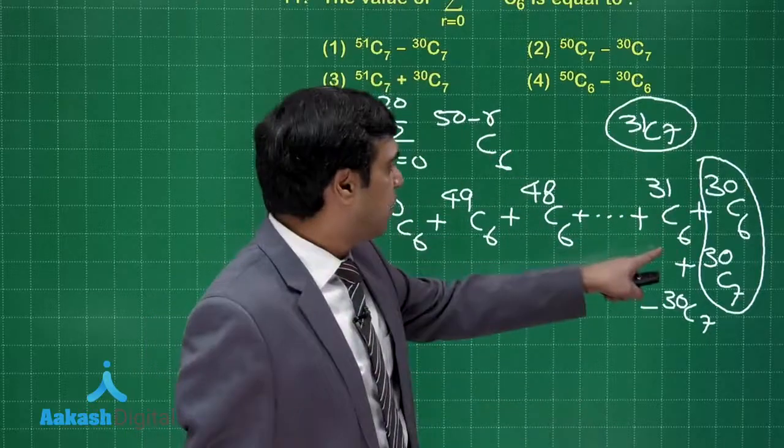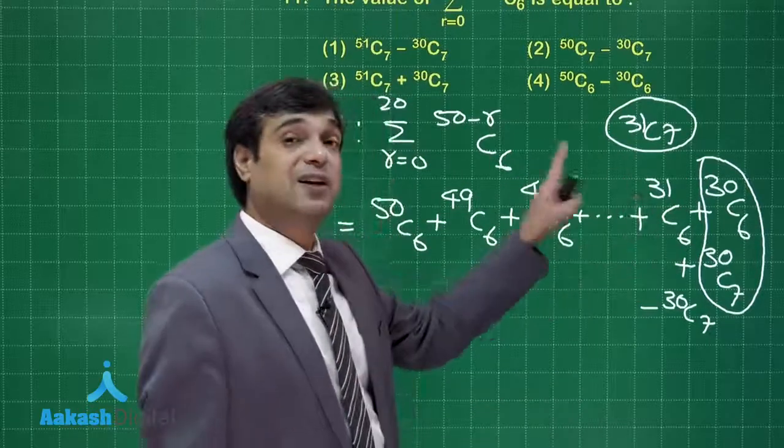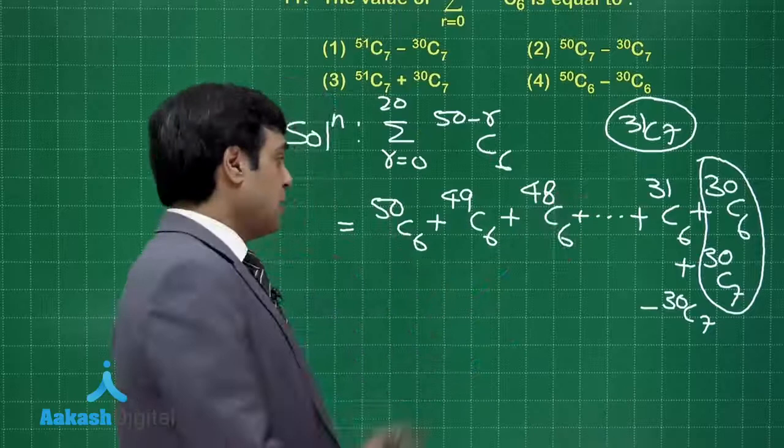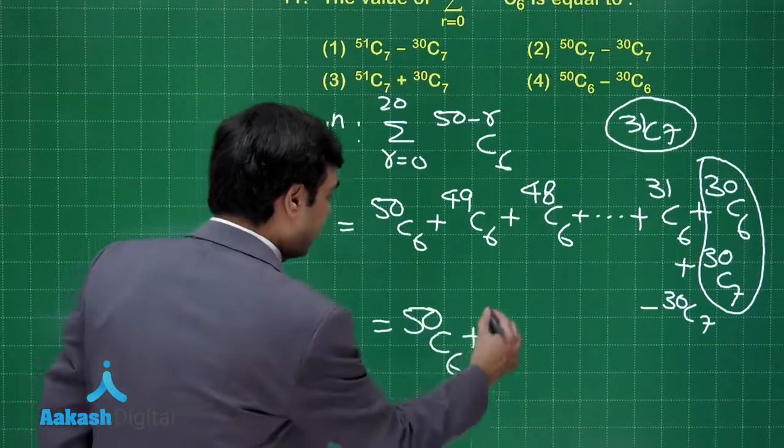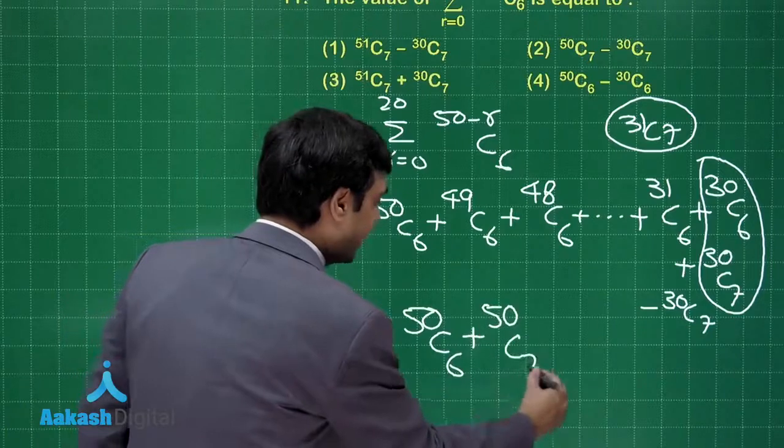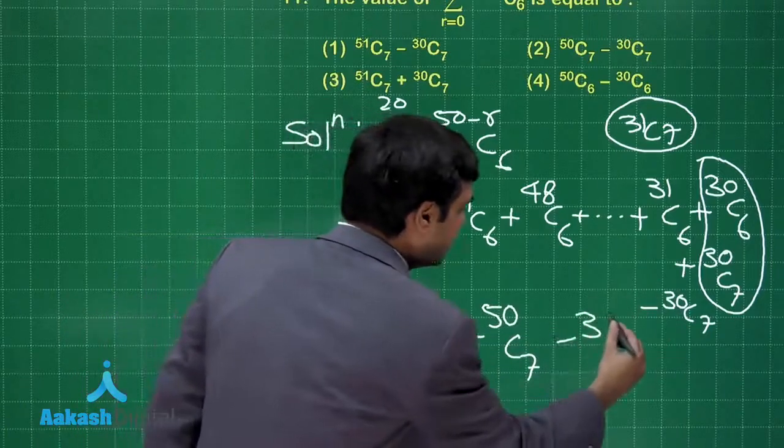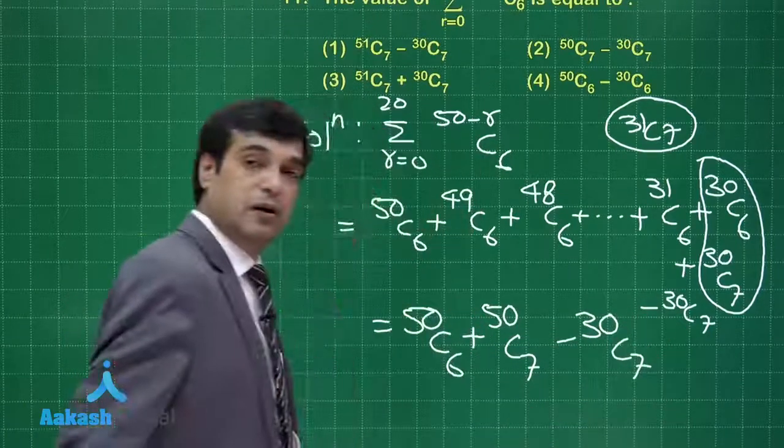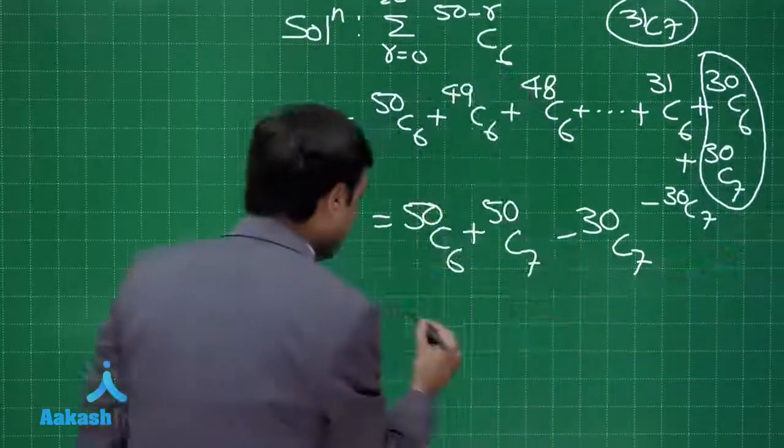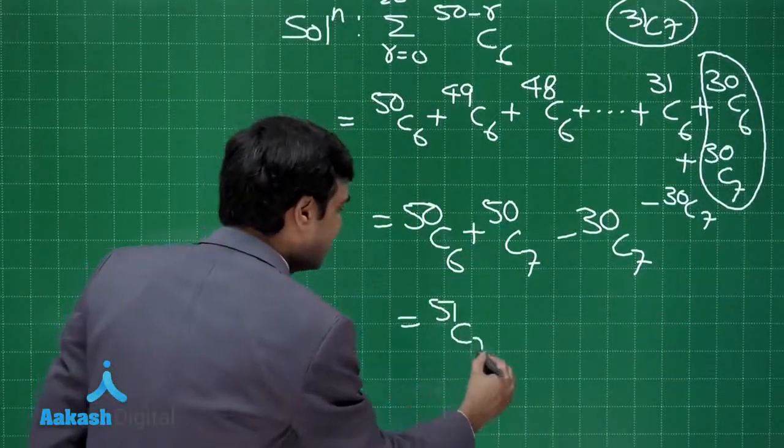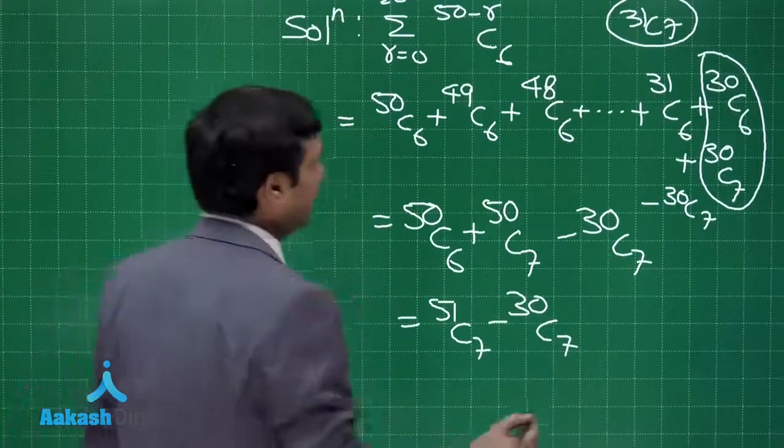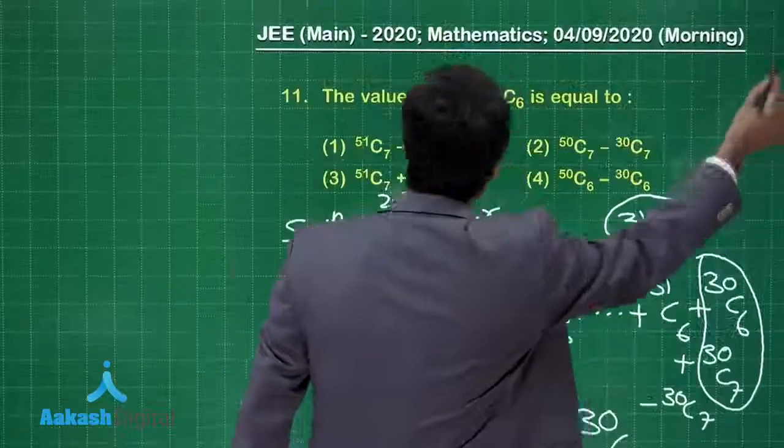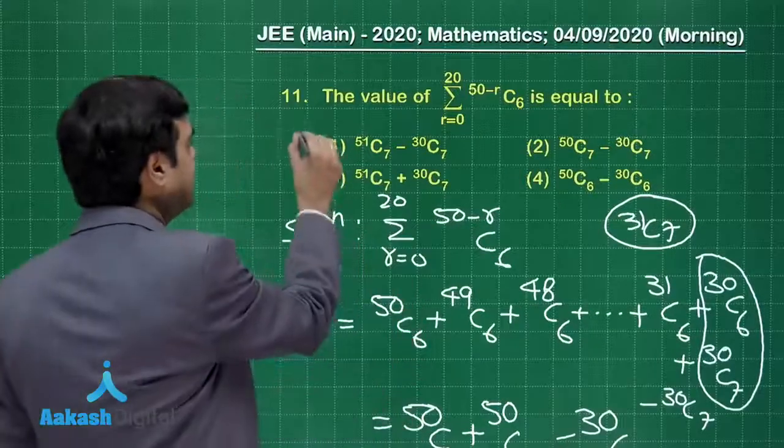This is combined with the previous one and gives you 32 C 7, and so on. That means finally you will be getting 50 C 6 plus 50 C 7 and the last term that is 30 C 7. These two combined will give you 51 C 7 minus 30 C 7.